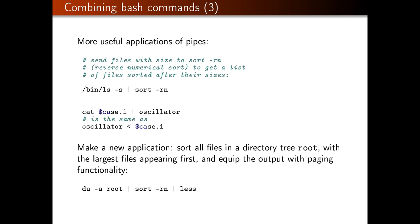You can even use pipes multiple times. In this example, the first command shows the size of directories in a root directory, we pipe that to 'sort' to sort by file size, then pipe again into 'less'. The 'less' command lets you scroll up and down using keyboard arrow keys — if your command outputs more information than fits on the screen, pipe it to 'less' so you can comfortably navigate the output.